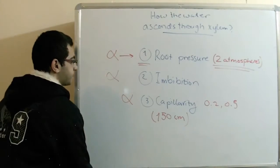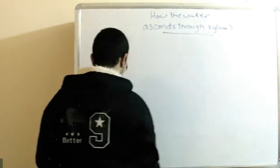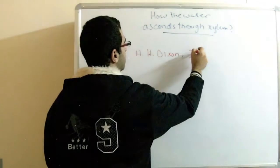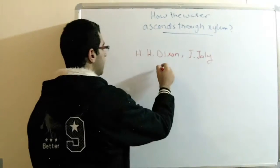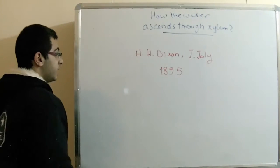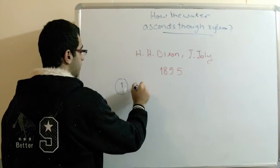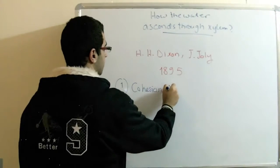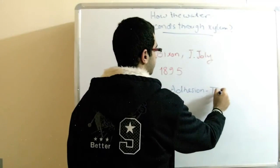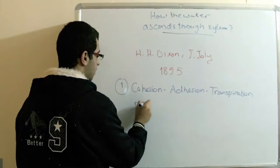After all these assumptions, two scientists which are called H.H. Dixon and J. Joly, in the year 1895, they made a theory which explains this phenomenon. This theory is called Cohesion-Adhesion-Transpiration Pull Theory.